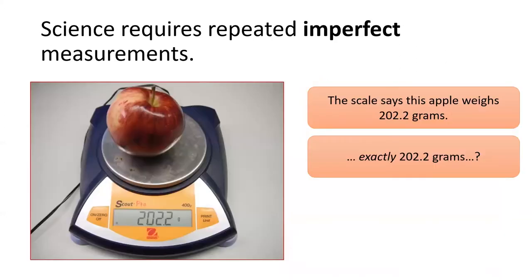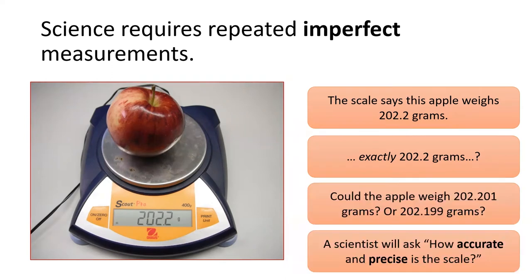As I said, no measurement is absolutely perfect. For example, this scale claims the apple is 202.2 grams. However, it's unlikely that the apple is exactly 202.2 grams. It could be 202.201 grams. It could be 202.199 grams.